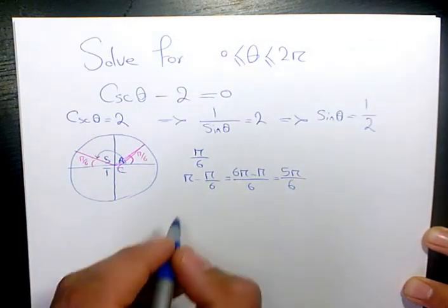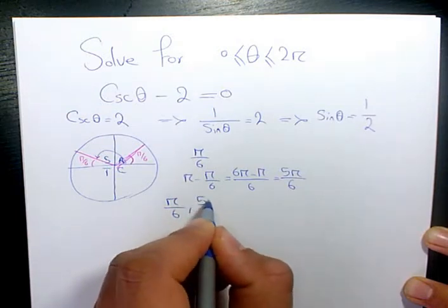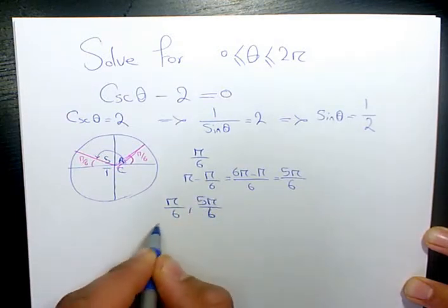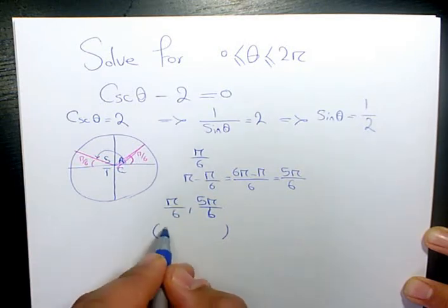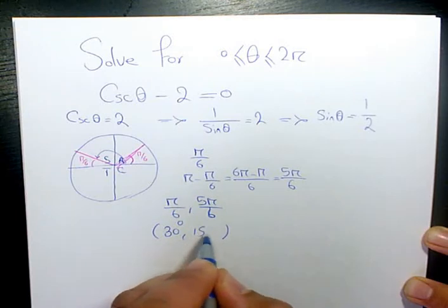So these are the two answers: π over 6 and 5π over 6. If you want to write in terms of degrees, π over 6 is 30 degrees and 5π over 6 is 150 degrees. These are the two answers to this question.